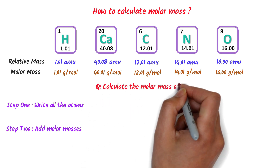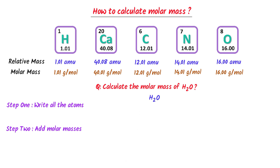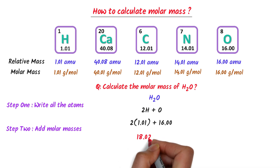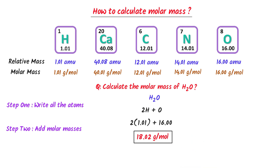Secondly, calculate the molar mass of H₂O. We can see that there are two atoms of hydrogen and there is one atom of oxygen. I write two hydrogen plus one oxygen. The molar mass of hydrogen is 1.01 and that of oxygen is 16.00. I write 2 times 1.01 plus 16.00. After calculation, I get 18.02. And lastly, I put the SI unit of molar mass which is gram per mole. So the molar mass of water is 18.02 gram per mole.